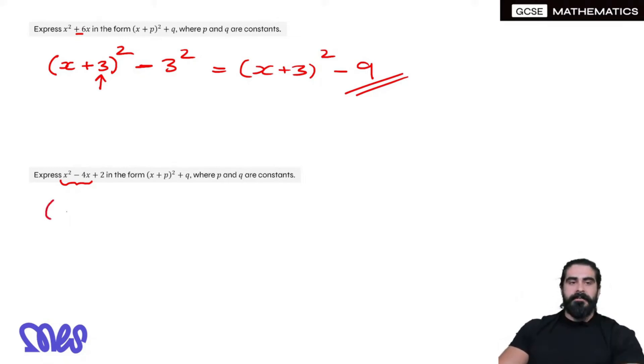What do we do? We introduce a bracket, x. We half the coefficient of x, it's -4, we half that, is -2. Close the bracket, squared. Now you can see it's the exact same form as the one above. Then we subtract this number squared. It's the number 2 squared.